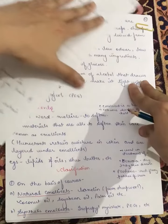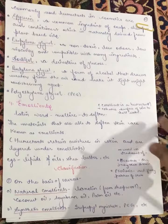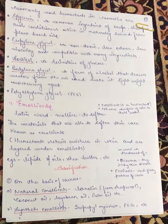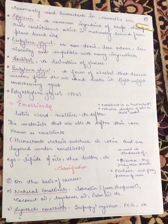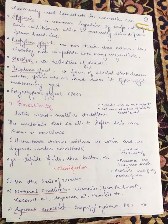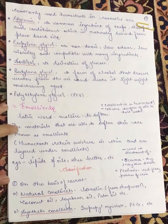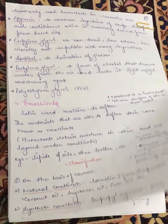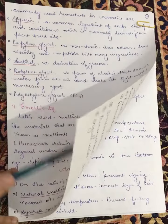The most commonly used humectant is glycerin. It is a common ingredient of soaps, shampoos, and conditioners, which is naturally derived from plant-based oils. Glycerin is the most commonly used humectant.